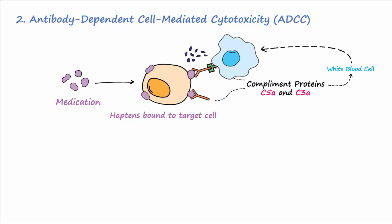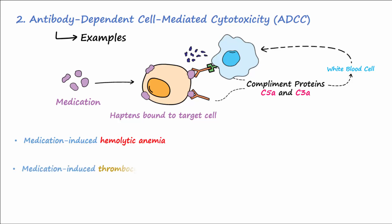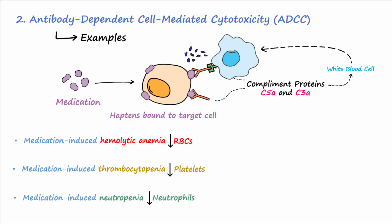Clinical examples of ADCC include medication-induced hemolytic anemia, medication-induced thrombocytopenia, and medication-induced neutropenia, where the body's own immune system is destroying red cells, platelets, and neutrophils after medication treatment. ADCC also occurs with transplant rejection, immune reactions against parasites, and immune reactions against neoplasms.